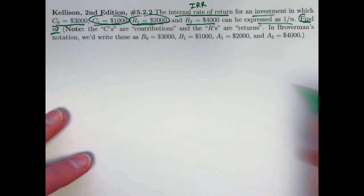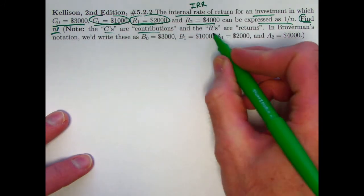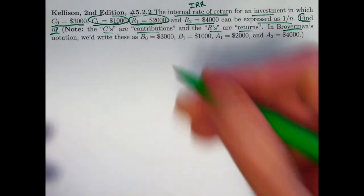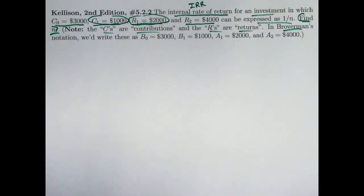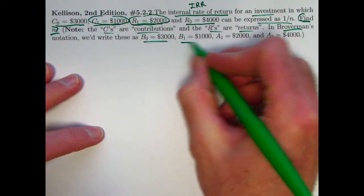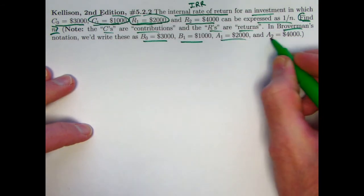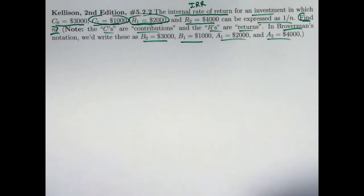So this is Kellison's notation. The C's are contributions, and the R's are returns. With Broverman's book, since contributions are going from you to whomever you're lending to, you think of those as negative. They are the B's in Kellison's book, and as far as figuring out the IRR, you would think of them as negative. And the R's are A's in Kellison's book.